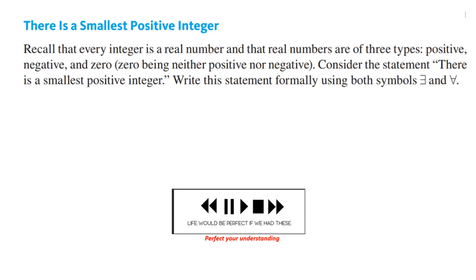Let's think about the same kind of consideration here, and we're going to be talking about there is a smallest positive integer. Recall that every integer is a real number, and real numbers are of three types: positive, negative, and zero. Zero being neither positive nor negative. Consider the statement: There is a smallest positive integer. Write the statement formally using both the symbols there exists and for every. And you could determine the truth value. You know what to do. Let's see how you did. And we'll see how you did in the continuing lecture.